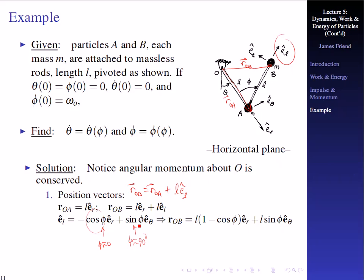Since this is in a horizontal plane, the angular momentum about point O is conserved — there are no external applied forces on either body, and the internal forces cancel out. Looking at position vectors: R_OA is L along the e_r direction. R_OB is R_OA plus the vector from A to B, which is L in the e_l direction. The unit vector e_l equals minus cosine(phi) e_r plus sine(phi) e_theta. So R_OB equals L(1 minus cosine phi) e_r plus L sine(phi) e_theta.